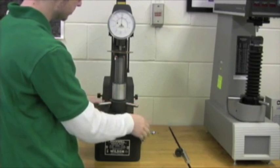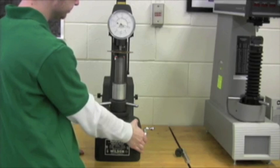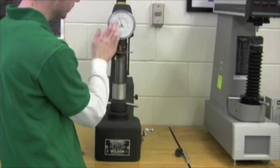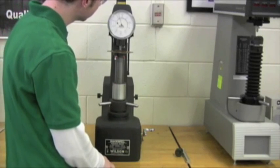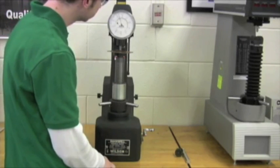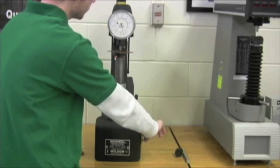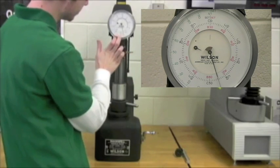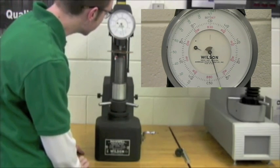So now that everything's zero, we're going to let go of our crank handle. Wait for our long needle to stop moving, which can take a couple seconds. And we're going to pull the crank handle back one more time. And this is our final reading right there at about 45.